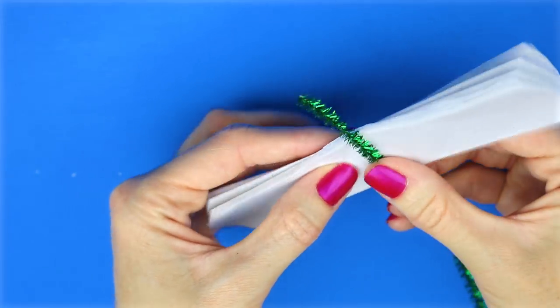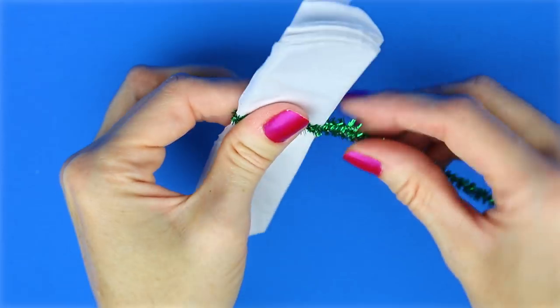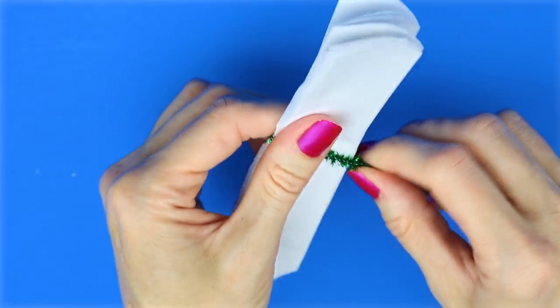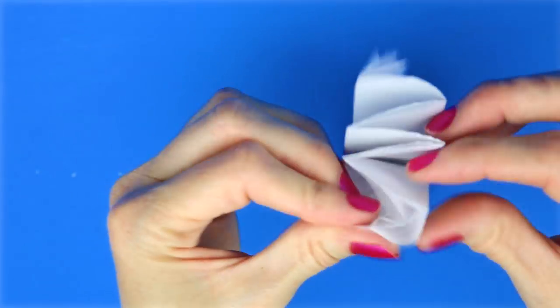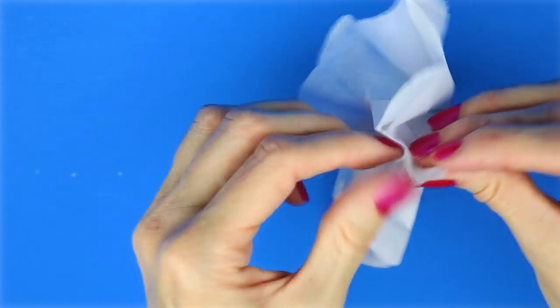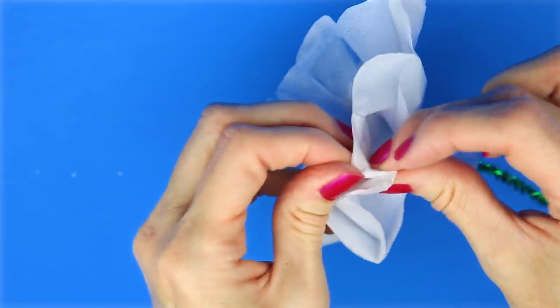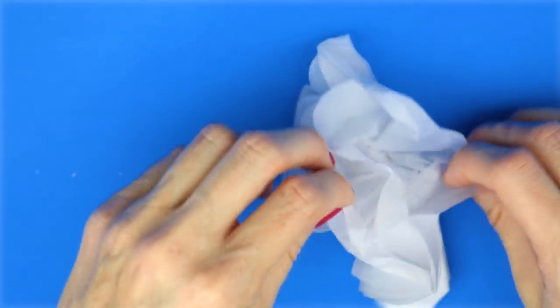Using a green pipe cleaner, I placed that in the middle and twisted it around. I started carefully pulling up the first layer of tissue paper. And then I continued pulling each layer up toward the top until all the layers of the tissue paper were separated and the flower was formed.